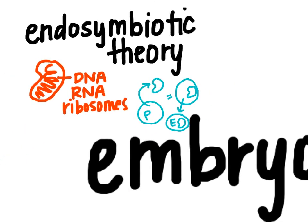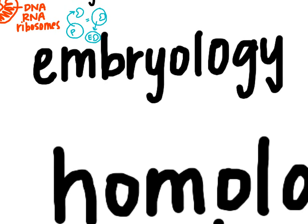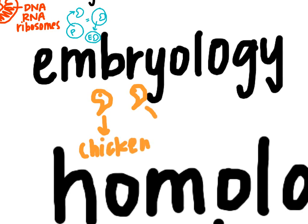The next one is embryology. Embryology is basically looking at embryos of different animals and noting that at very early stages of development, they all look pretty much the same. They all kind of have this tail shape with a big eye. So one might grow up to become a chicken, and another might grow up to become a human, but at early stages of development they all look the same — which tells us we probably have a common ancestor.